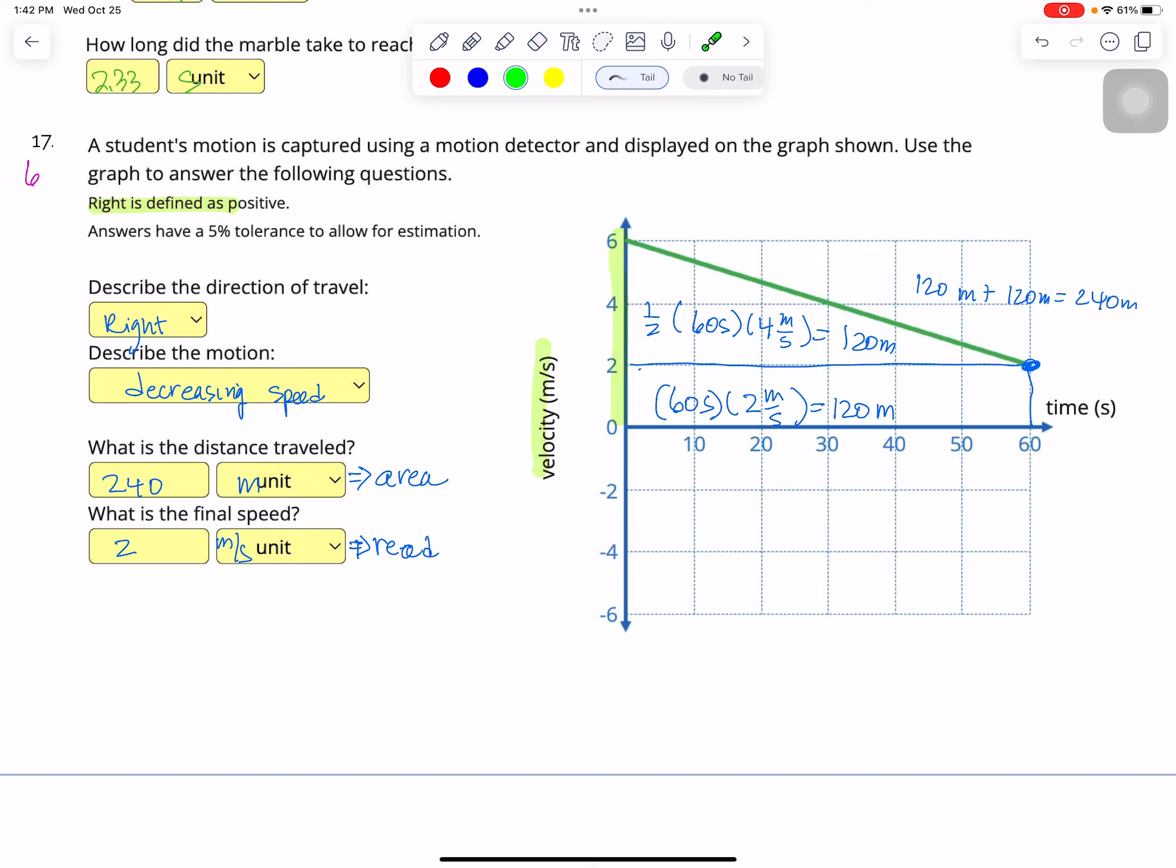Students' motion is captured using a motion detector displayed on the graph below. Use the graph to answer. So they tell me that right is defined as positive. I notice that all of my velocity values are positive. So that means the direction of travel is right. And then describe the motion. The velocity values are getting smaller. And so that means decreasing speed. What is the distance traveled? So in terms of my graph interpretation, velocity versus time, the distance traveled is the area under a graph. This is not the only way to solve it. But I think this is the way I solved it. So to find the area under the graph, I've got a rectangle.